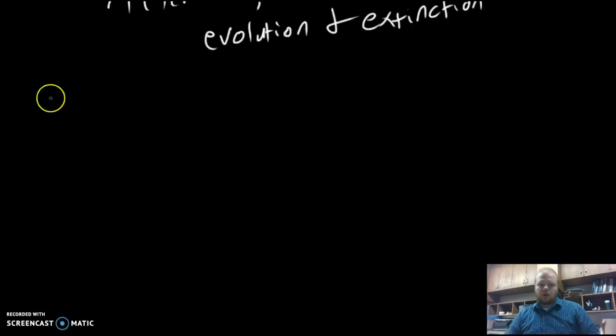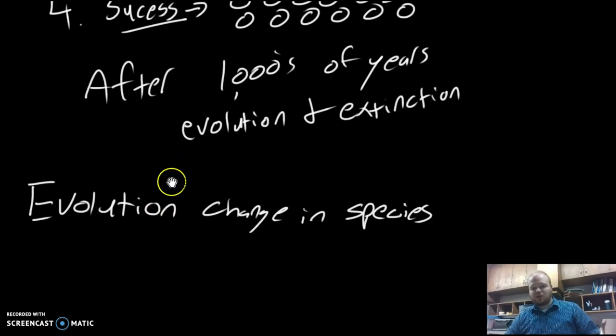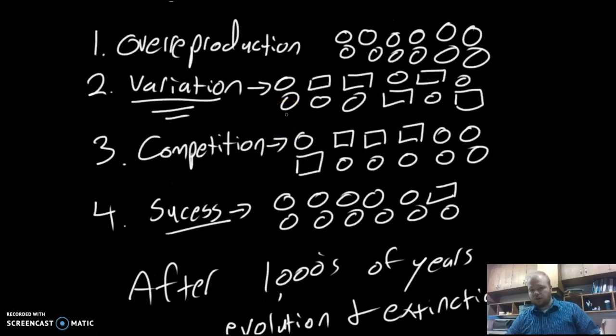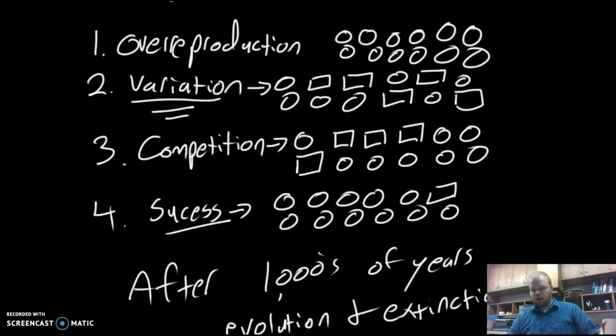This brings us to our last thing: what is evolution? Evolution is basically a change in species. How this happens is something we're going to talk about in future videos. We need to know more than just natural selection. Natural selection is the primary force of evolution, but it is not the only thing that causes evolution.